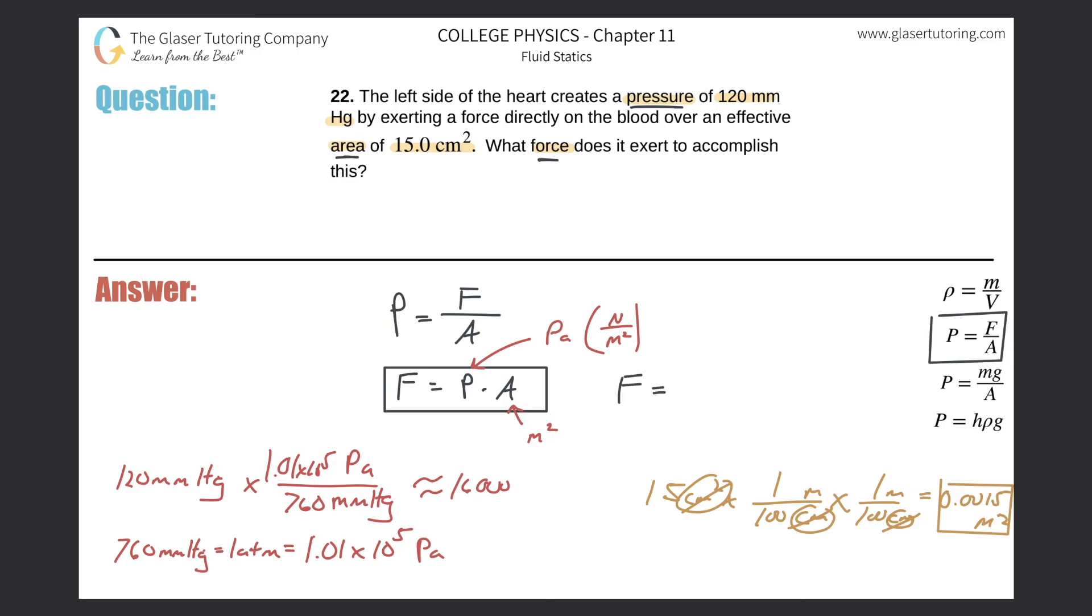So the force will be equal to the pressure in Pascal, which was about 1600, but the exact value was 15,947. Multiply it by then the square meter, 0.0015. And let's see what we get. So 15,947 and we get about 23.9. So the force here is going to be about 23.9 newtons. So that is that. Thanks for tuning in, guys. Hope this helped. Please remember to subscribe. We'll see you next time.